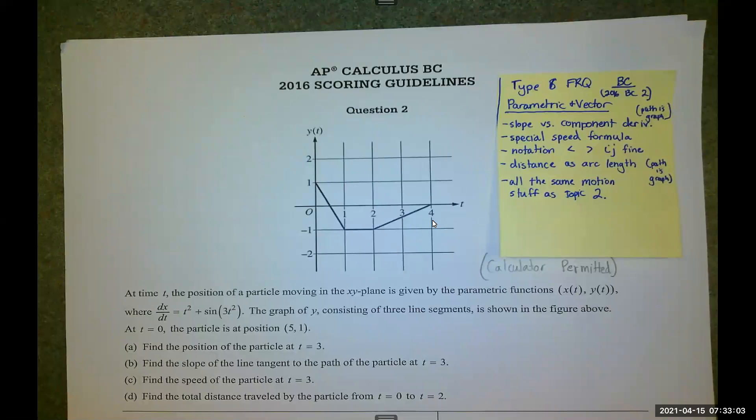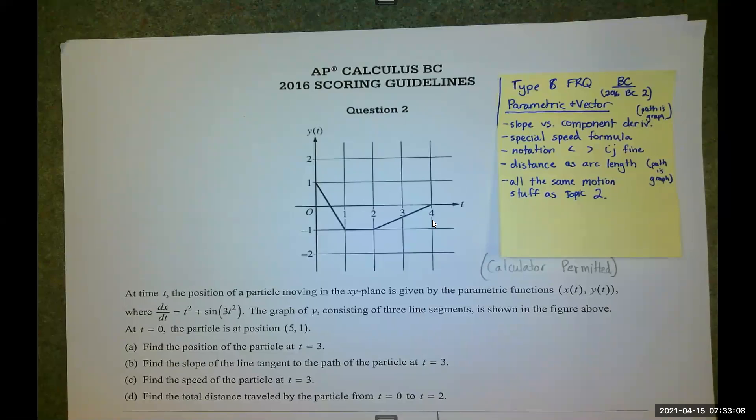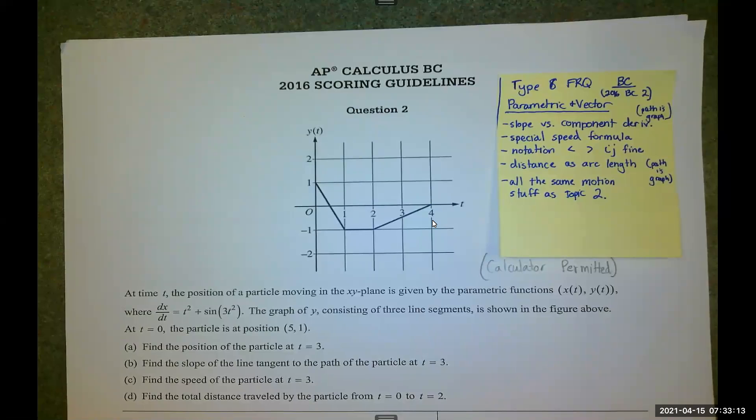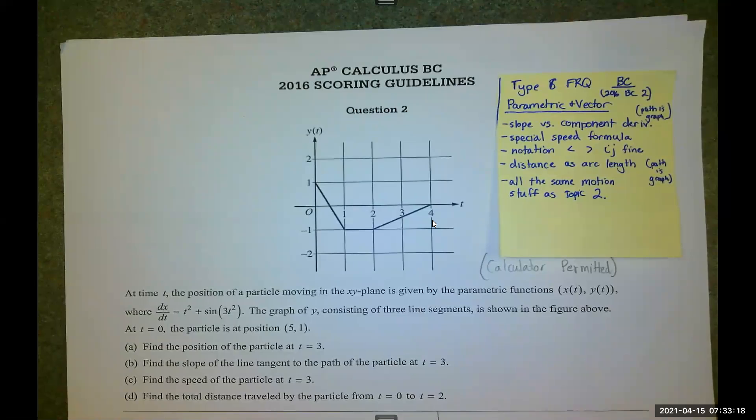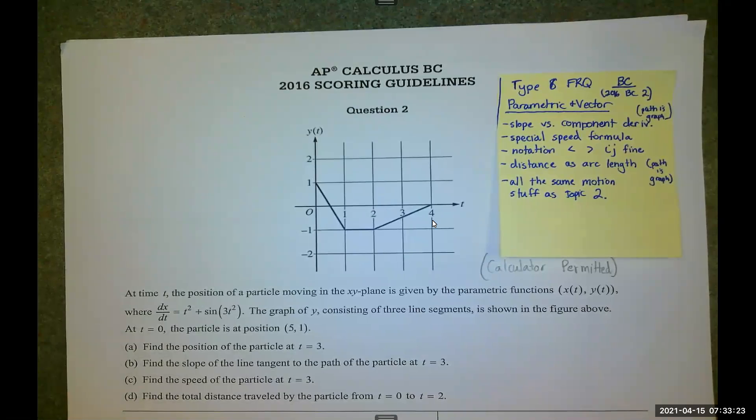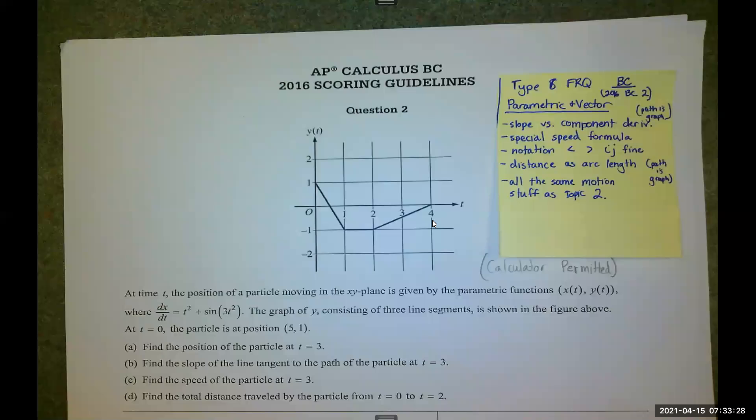Types of things that you might see that I think are going to confuse you. First one is the eternal battle of the derivative. When we talk about parametrics and vectors, we have horizontal and vertical components. Those derivatives don't mean the same thing as the slope. The horizontal and vertical components combine together to form the path, to form the curve.